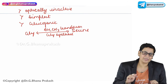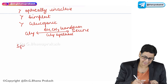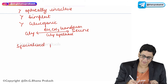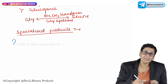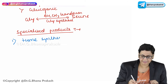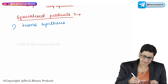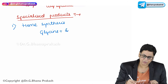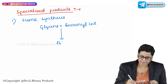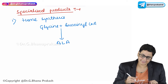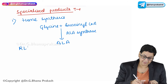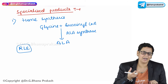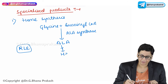The question arises: what are the important specialized products synthesized by glycine? This is a question which has been asked in exams. The first one is in heme synthesis. The first important reaction is glycine combining with succinyl-CoA to form a very important intermediate — aminolevulinic acid (ALA) — in the presence of ALA synthase. This is the rate-limiting enzyme. This ALA will then go on to form heme at the end.